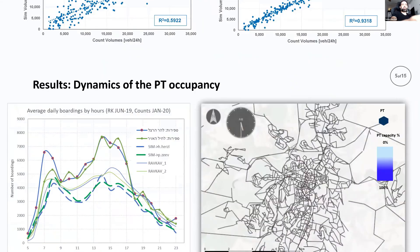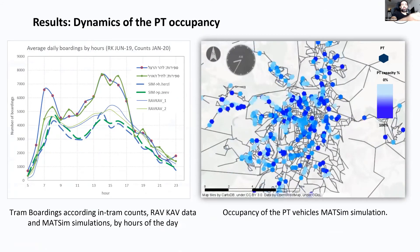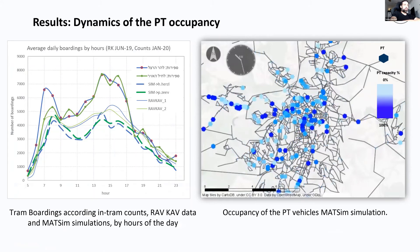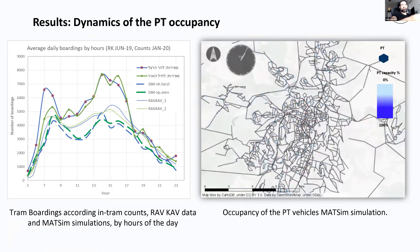Here we have the dynamics of public transport in Jerusalem. This shows a simulation from Herzl to Pisgat Ze'ev — the dashed line — compared with real data above. We have Sefirot boarding counts from the Ravkevet Kala, and also Ravkav data. Our Jerusalem model reacts accurately to Ravkav data. We're still in the calibration process for public transport, but these are fairly advanced preliminary results.